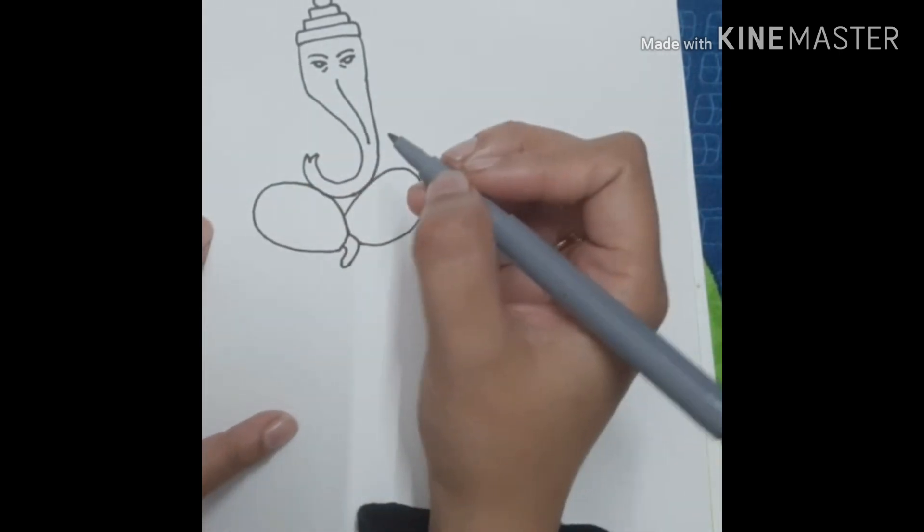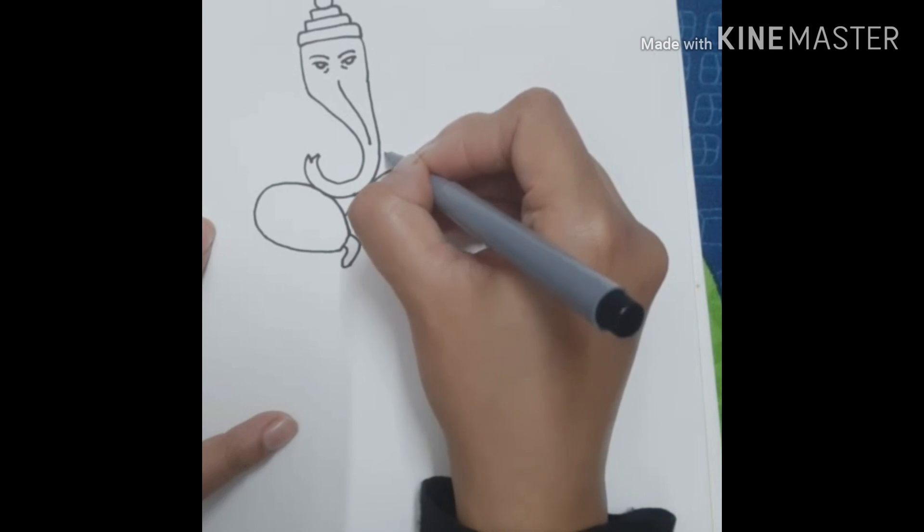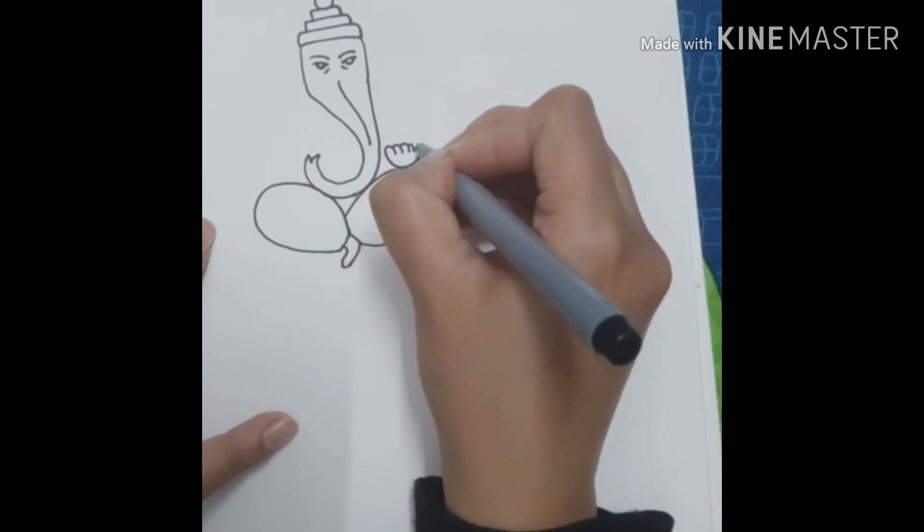Let's draw Ganesha's hands. Hands are very easy. You need to draw a semicircle, and then draw fingers like this. At the last, we will make the thumb.